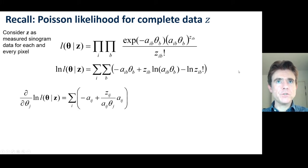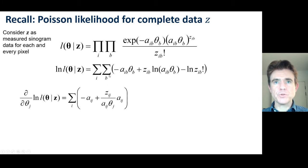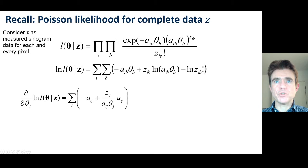To maximise the complete data log likelihood, we take the partial derivative with respect to a pixel value. For a particular pixel value theta_J, J corresponds to one of the indices in the summation over all pixels B. When B equals J, we get a coefficient A_{IJ}.